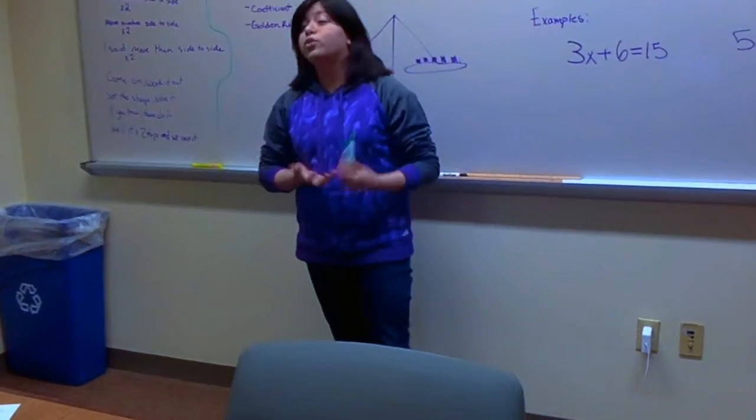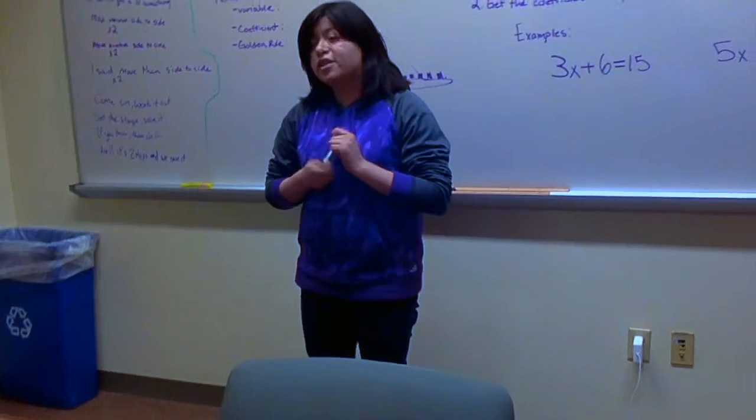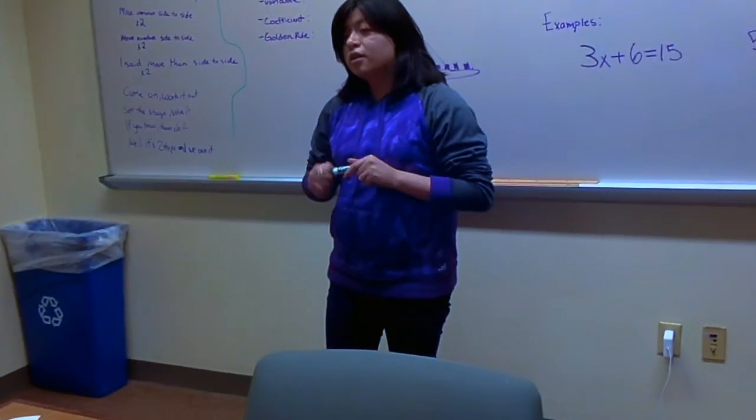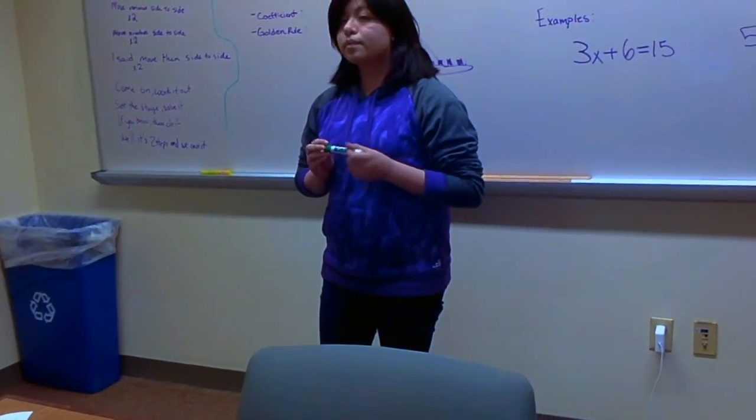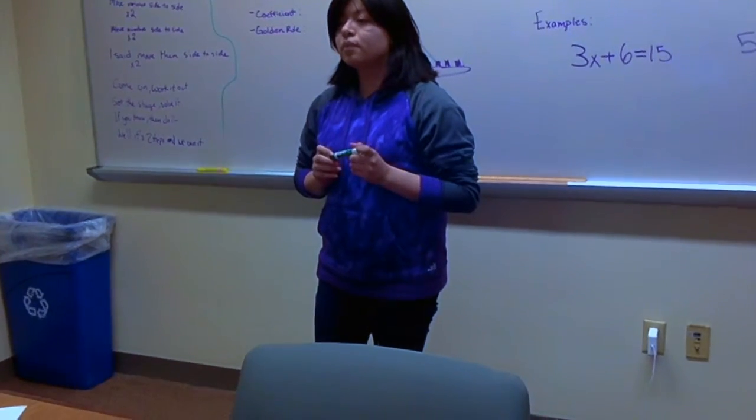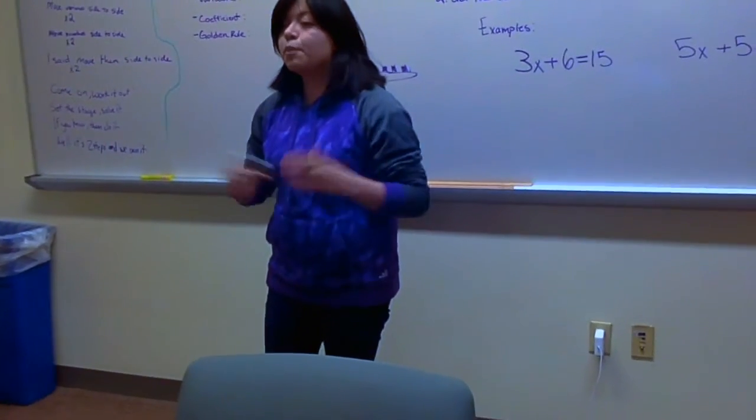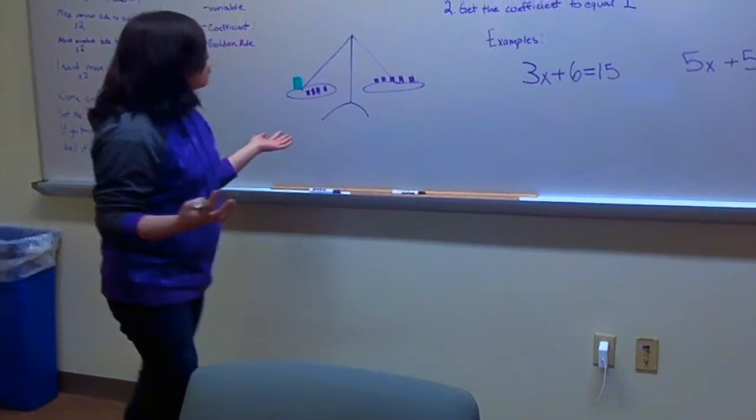So, the last one is the golden rule. And, Blair, can you explain to me what the golden rule is? Doesn't it mean that, like, whatever you want to add to the equation, you have to do the other side? Perfect. So, that is what the golden rule is.